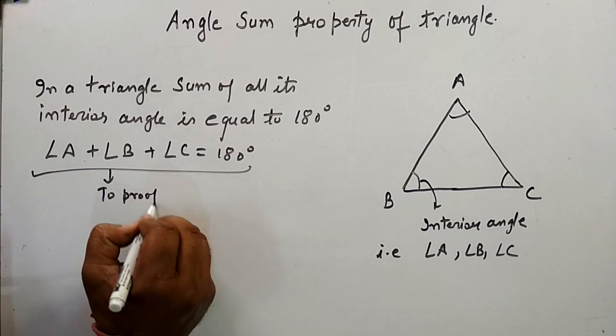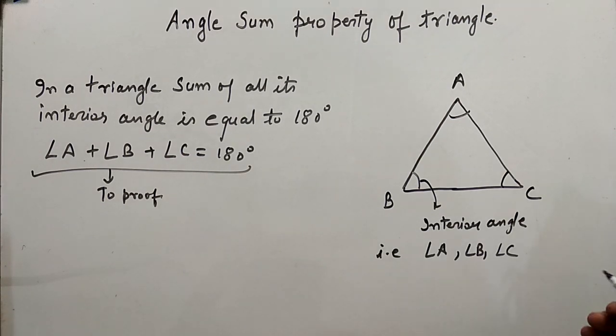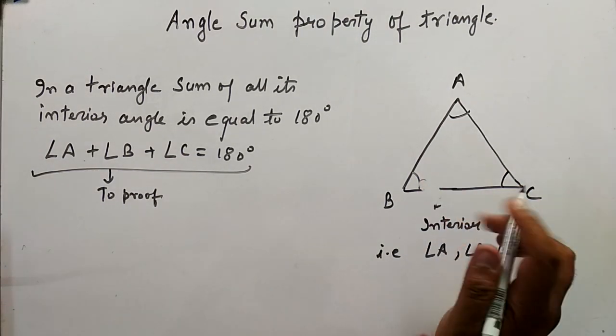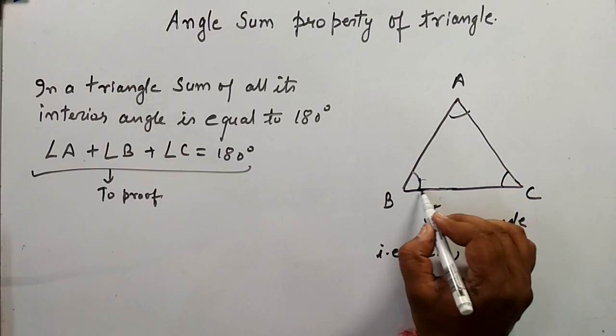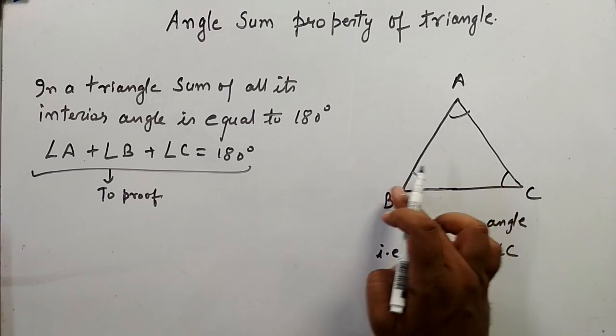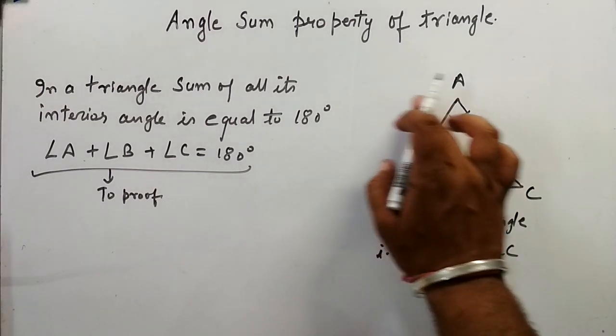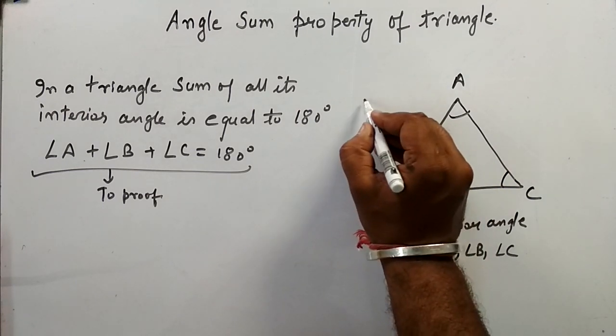So for proving this, we are doing a little construction. That is, we are making a line that is parallel to this base BC and which passes through the vertex A.